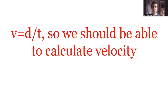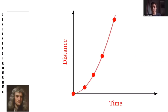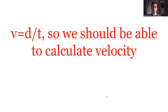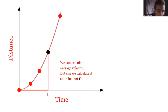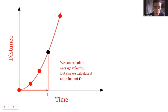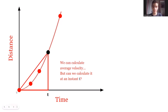Velocity is like an object's speed except it also takes into account direction — it can be positive or negative, usually associated with moving forwards or backwards. Velocity is calculated through distance over time. Given this formula, we should technically be able to calculate velocity, but it's actually not so simple — how do you define the velocity at a certain point? The average velocity over a time t is the total change in distance divided by the time elapsed — graphically, that's the slope of the line between two points.